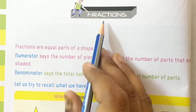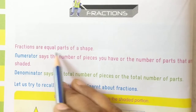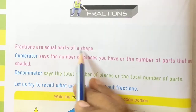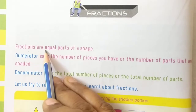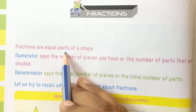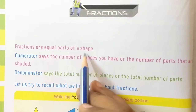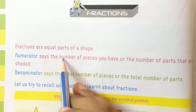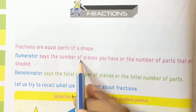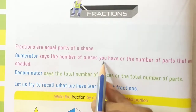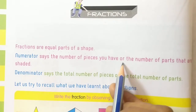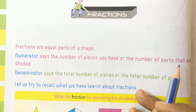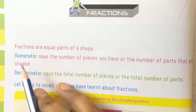Fractions are equal parts of a shape. The numerator says the number of pieces you have, or the number of parts that are shaded.